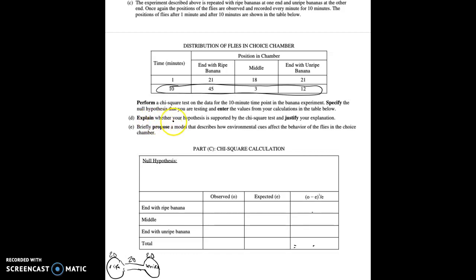And so explain whether or not your hypothesis is supported by the chi square test and justify your explanation. So first, let's go through and make sure that you are showing all of your math when you do this. The end with the ripe banana. So what are our observed data? And what is our expected data? So we just said that we expect that each of these are going to be 20. There's going to be 20 flies. And our observed data. So the end with the ripe banana, we suspect there was actually, so we observed that there was 45. In the middle, we observed that there was 3. And with the unripe banana, we observed that there was 12. And that's a total of 60.